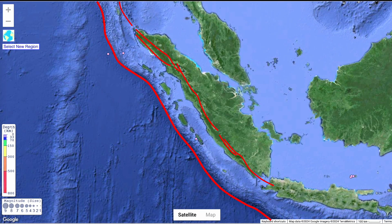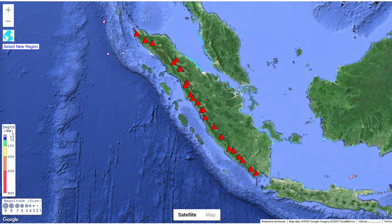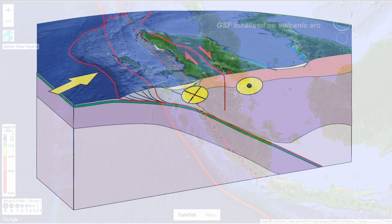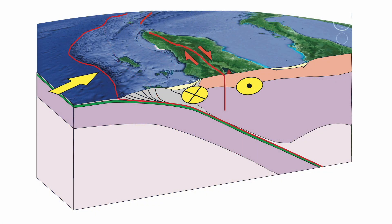So why is the Great Sumatran Fault located where it is? Let's add the volcanoes active during the Holocene, the past 10,000 years. On a large scale, volcanoes and fault coincide. So it looks like the fault is tied to the volcanic arc, perhaps because the magma here makes this part of the crust weaker and therefore more prone to faulting.